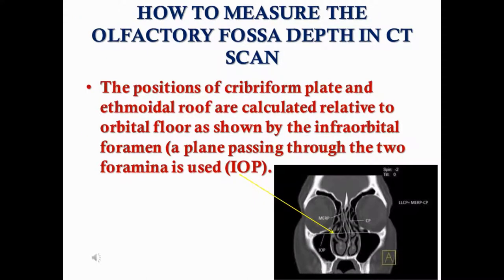To calculate the olfactory fossa depth on CT scan, the coronal view is normally used. The positions of the cribriform plate and ethmoid roof are calculated relative to the orbital floor using a horizontal plane passing through the two infraorbital foramina, as shown by the yellow arrow in the figure.